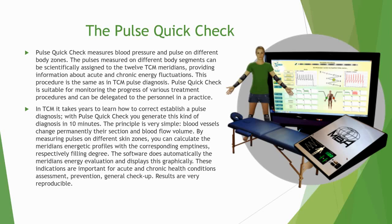The principle is very simple: blood vessels permanently change their cross-section diameter as well as the blood flow volume. By measuring the pulses on different skin zones, you can calculate the meridians' energetic profiles with their corresponding emptiness or fullness degree. The software with this device does this automatically — the meridian energy evaluation is performed automatically and, when the measurement is finished, displays all results in an easy-to-understand graphic way.